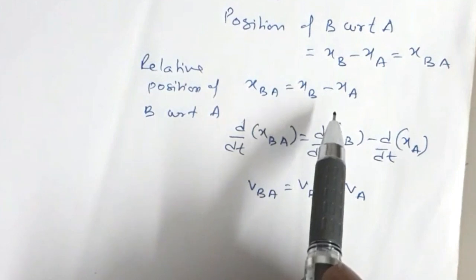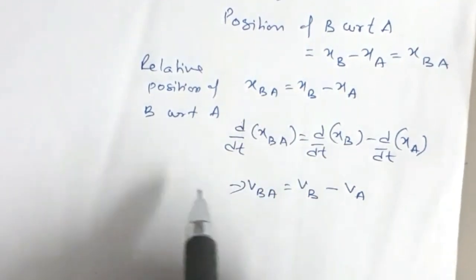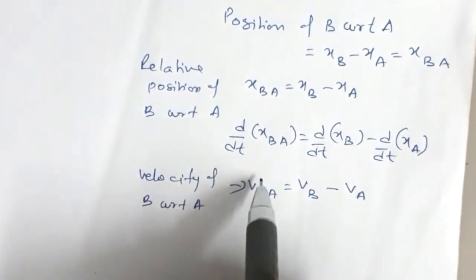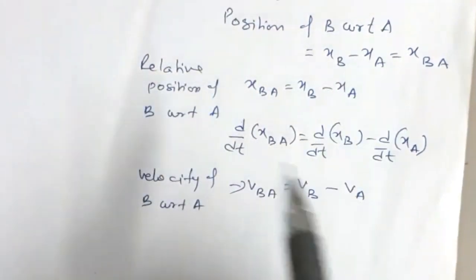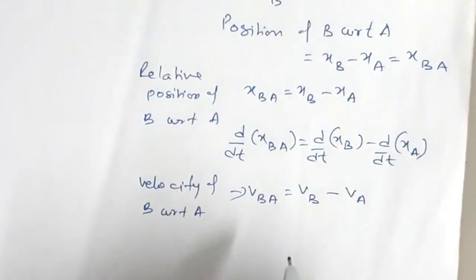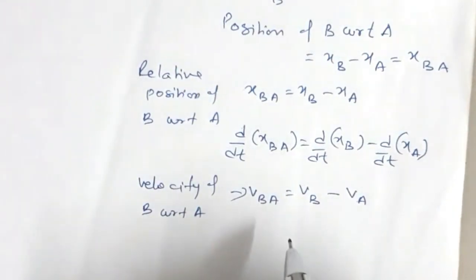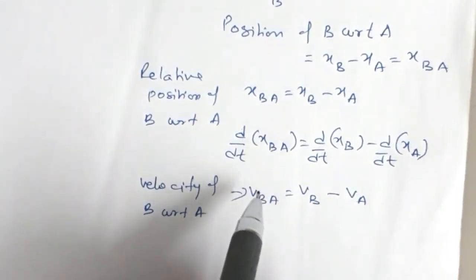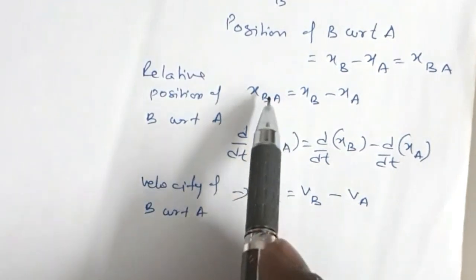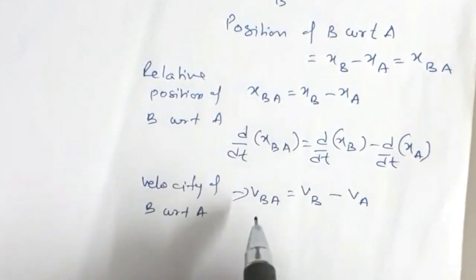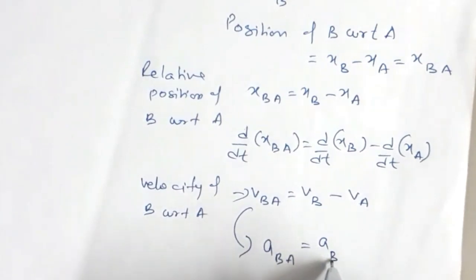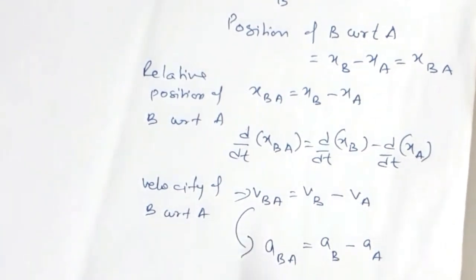From the relative position of B with respect to A, we obtained the velocity of B with respect to A. I have not marked the vector symbol here because it is one-dimensional motion along the x-axis. If I differentiate further, I can similarly get the acceleration of B with respect to A, which equals acceleration of B minus acceleration of A.